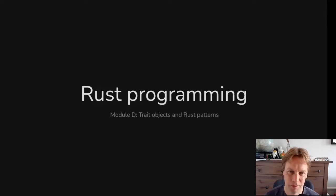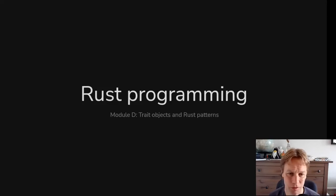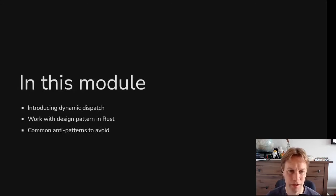Hello and welcome back to Rust 101. This is video 28. My name's Andy and we're going to be talking about trait objects and Rust patterns in module D. Today we're going to be talking about dynamic dispatch — what is it and why do you need it?